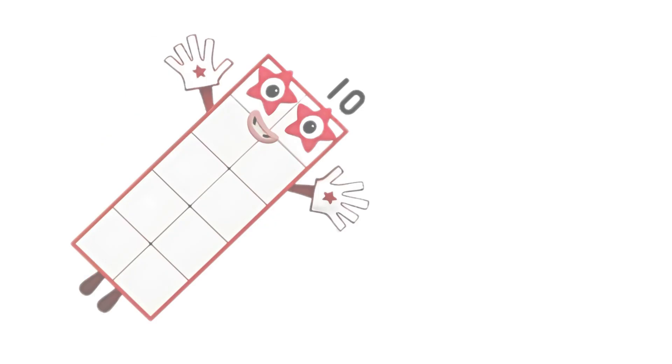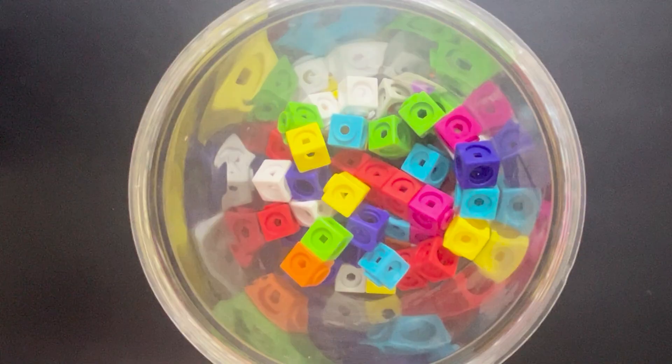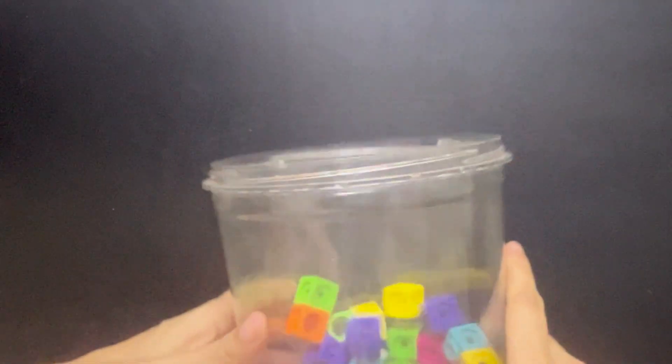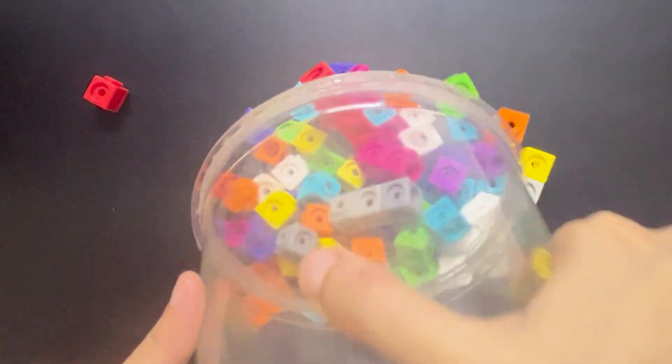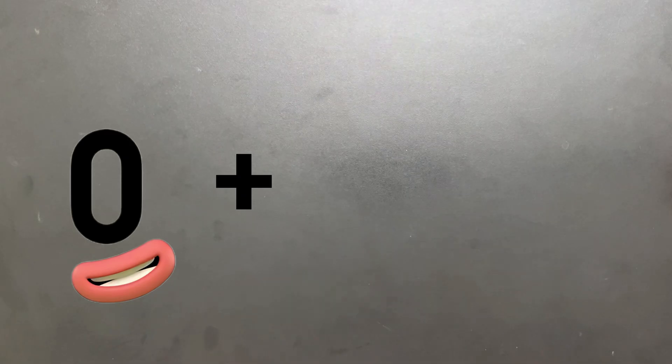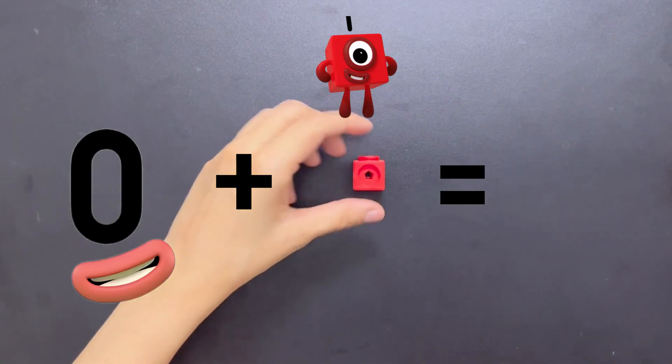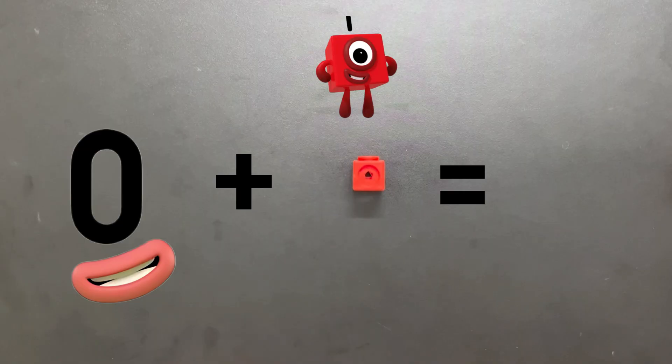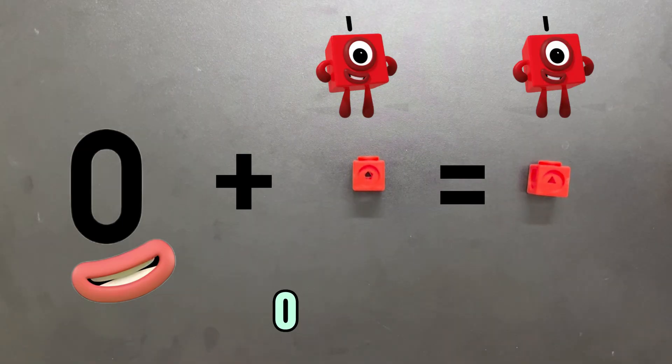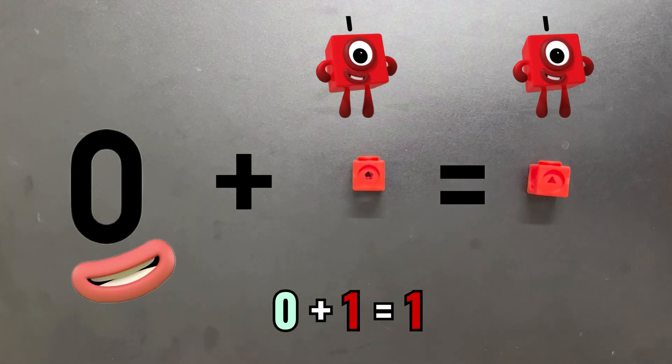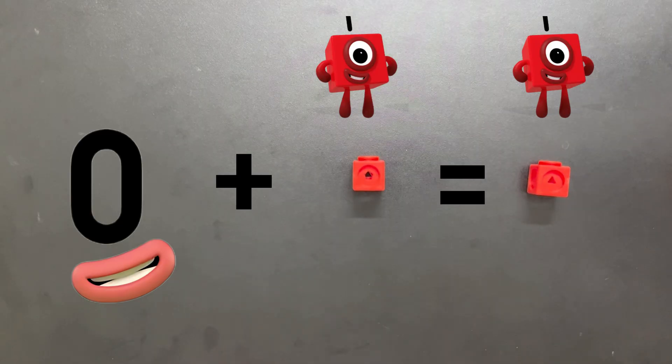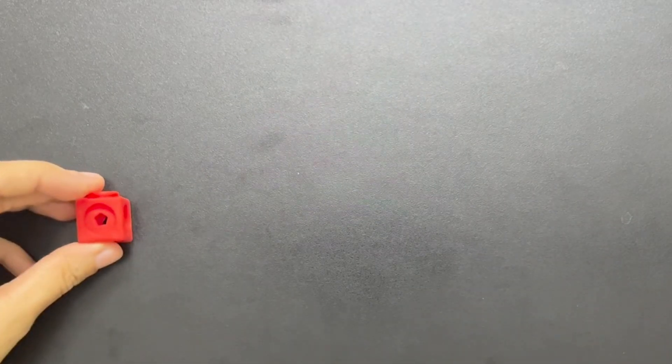Let's start with addition and build our way up. Zero plus one equals one. Number One is the Explorer—independent, curious, and loves adventures. She sees herself as the very beginning, the building block of everything. One plus one equals two.